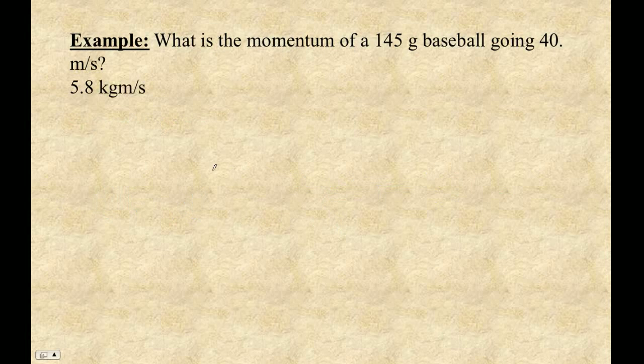And then, you know, here's an example. What is the momentum of a 145-gram baseball going 40 meters per second, which is 90 miles per hour? Well, this is simple. It's M times V. So it's 0.145 kilograms times 40 meters per second. And if you multiply that, you get 5.8.